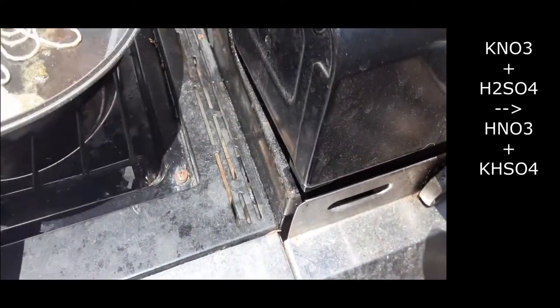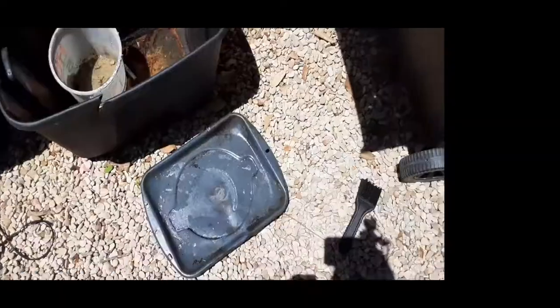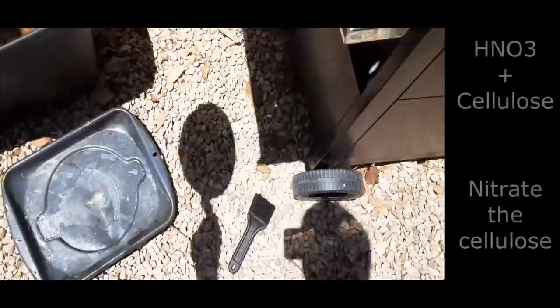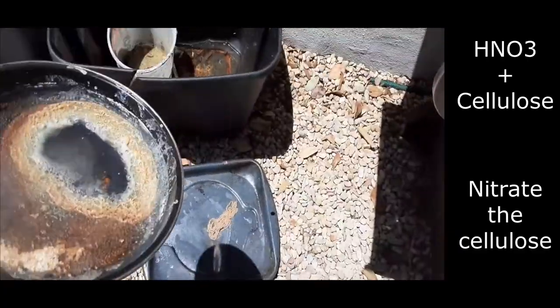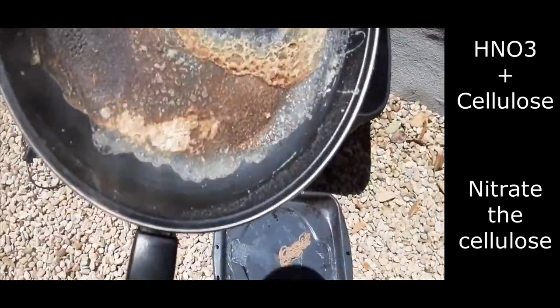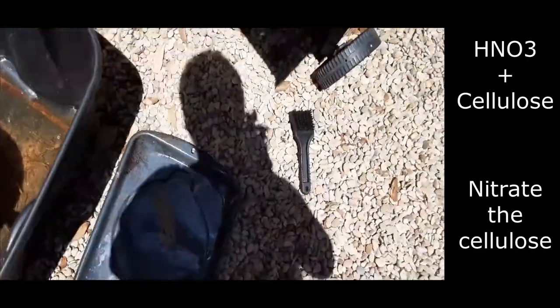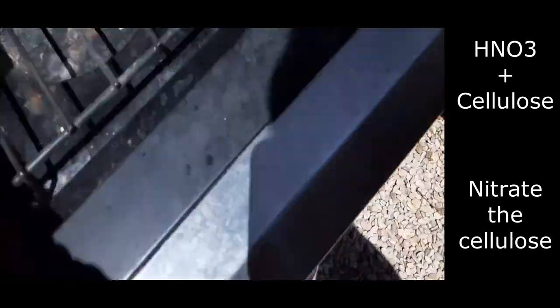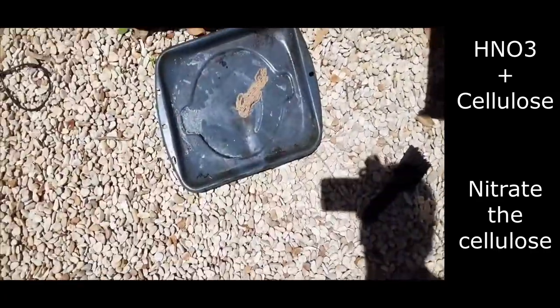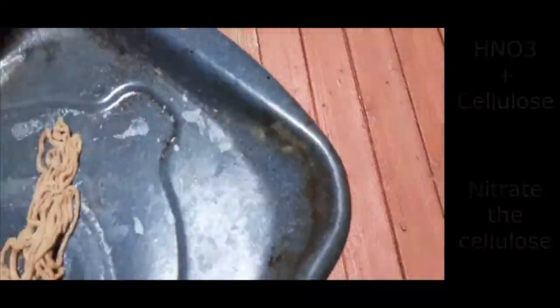As you can see, here I have the explanation and chemical reaction of how this is happening. Basically, what's happening is that we have to nitrate the cellulose by adding three nitrous groups onto it. As you can see in the video, we already finished and the nitration has been completed.